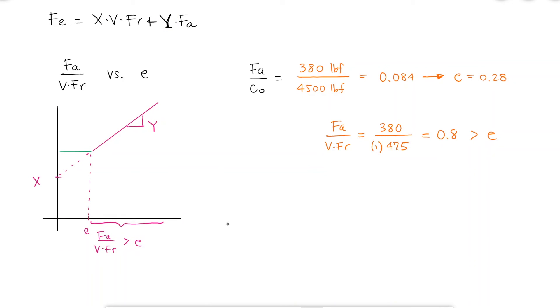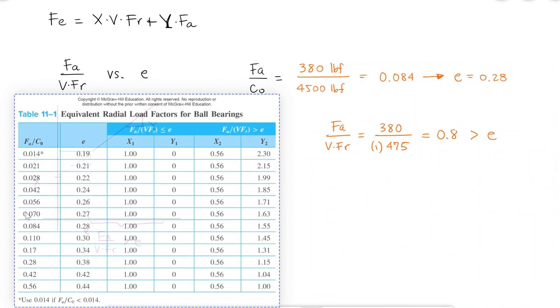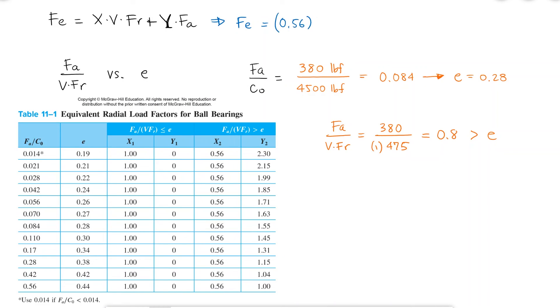Within that same table for equivalent radial load factors, I will find what I need. The equivalent load will be equal to 0.56 for X times 1 for V times the radial load plus the slope of 1.55 times the axial load of 380.